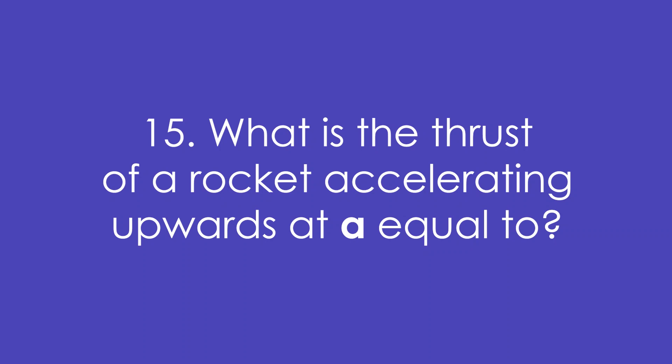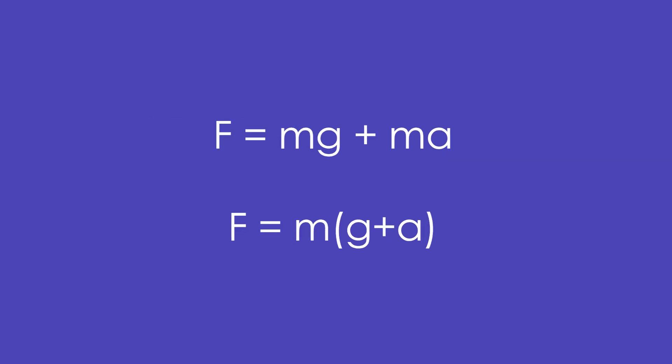15. What is the thrust of a rocket accelerating upwards at A equal to? It's equal to mg plus MA. Or we can factorise M times G plus A.